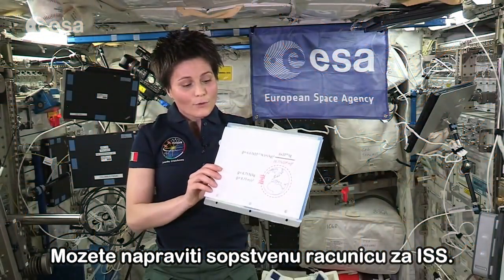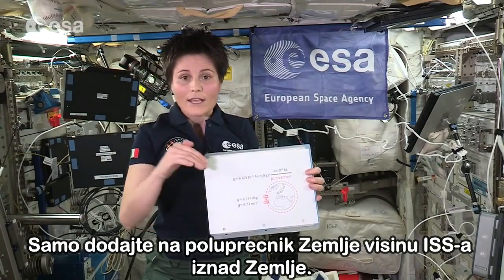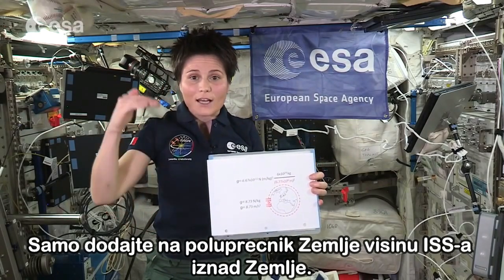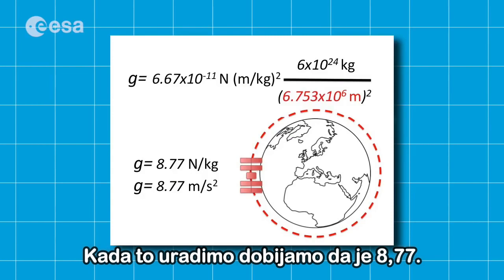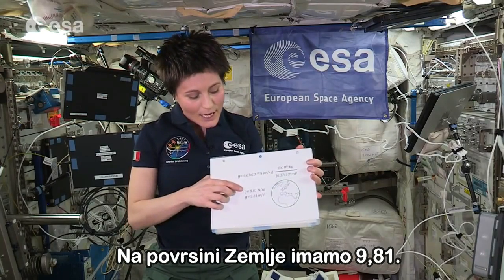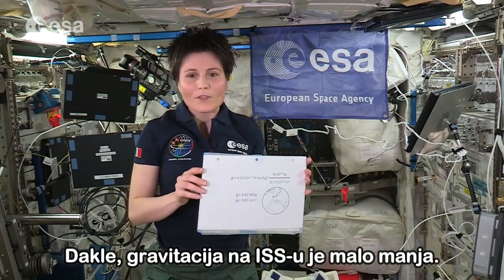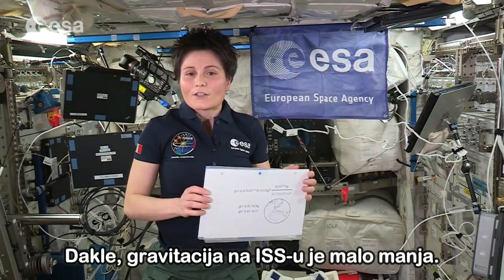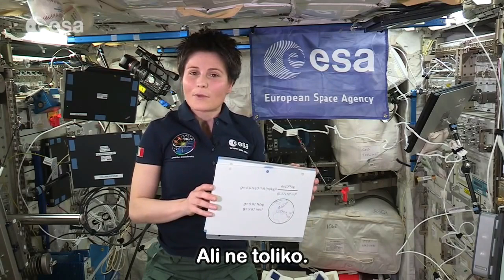You can make your own calculations for the International Space Station. Just add to the radius of the Earth the altitude of the ISS above the surface, which is about 400,000 meters. If we do that, we get a value for small g roughly equal to 8.7. On the surface of the Earth we have 9.81, which is about 10% bigger. So the force of gravity upon the International Space Station is indeed a little bit smaller, but not that much.